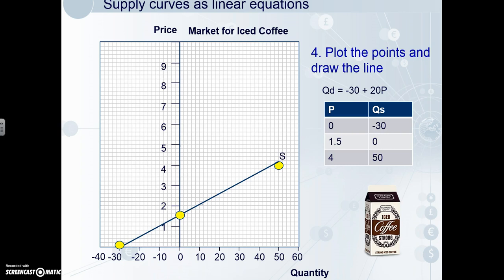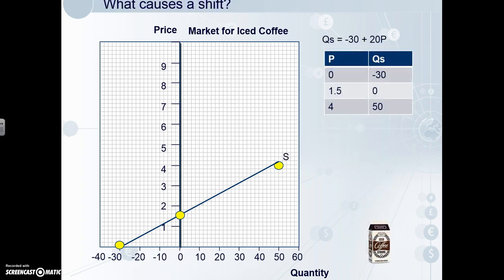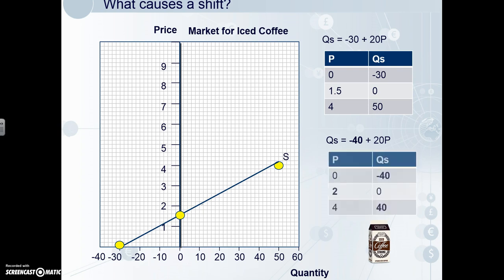Now again, we'll look at the shift of this curve. An increase in the price of milk would cause a decrease in supply, because milk is a major input into iced coffee, so the variable C will change. Remember that a decrease in supply is a decrease in supply at every price level, including zero. So whereas minus 30 were supplied at zero before, if we change the equation to QS equals minus 40 plus 20P, there are now minus 40 supplied at zero. We see a parallel shift in the supply curve when variable C is changed — shifted to the left, just as we'd expect from theory.